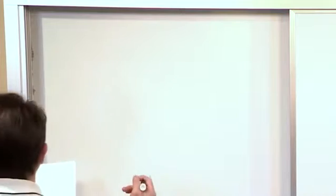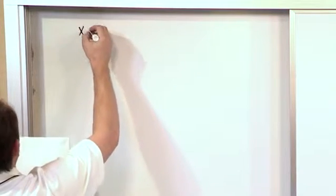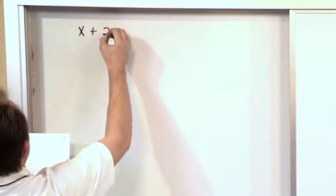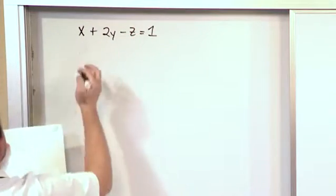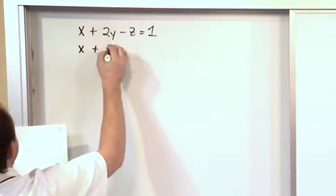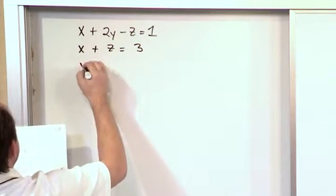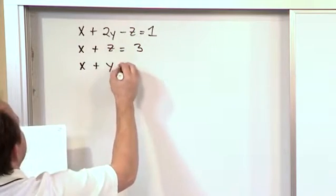So first of all, let's just write a system of equations down. It's not going to look too special at first. So we'll have x plus 2y minus z is equal to 1. Then we'll have x plus z is equal to 3. And x plus y is equal to 2.